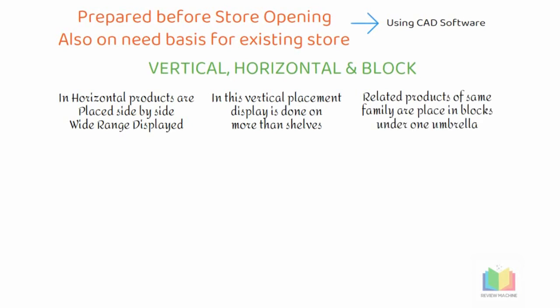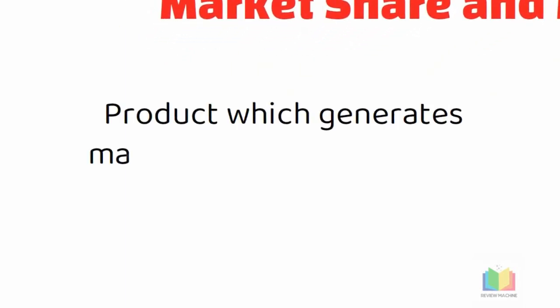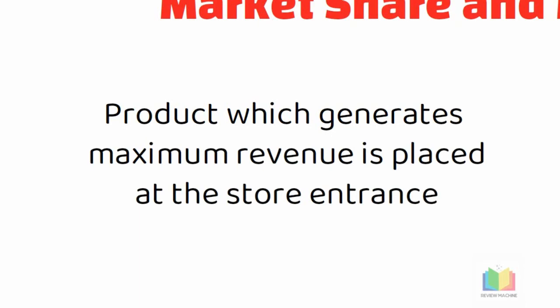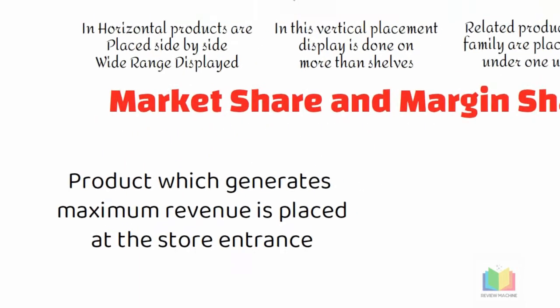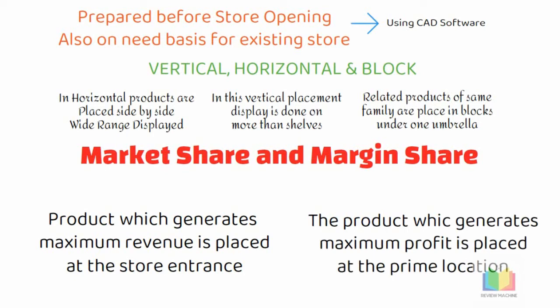Apart from these three, we also have market share product placement and margin share product placement. In market share product placement, the product which generates the maximum revenue for the store is ideally placed at the entrance of the store so that customers will notice it and buy it immediately. In margin product placement, the product which generates the maximum margin or maximum profit is placed at the prime location in the store. This will help in achieving the bottom line — that is, it will help to earn the profits.